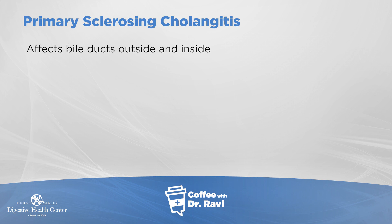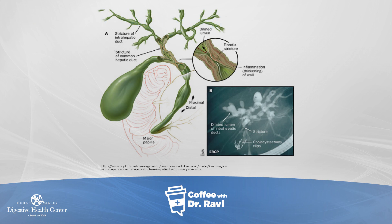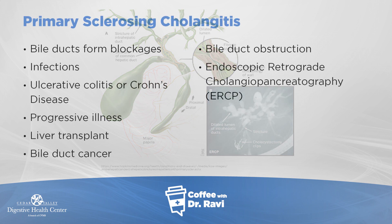The end-stage complications, vitamin deficiencies, and bone problems all need to be kept in mind. On the other hand, in primary sclerosing cholangitis, both the outside and inside bile ducts start getting affected, forming blockages so that bile doesn't drain properly, and people can develop infections. Interestingly, the great majority of people who have PSC also have ulcerative colitis or Crohn's disease. Ulcerative colitis is an immune-driven inflammation of the colon; Crohn's disease can affect the colon or small bowel. PSC is associated with inflammatory bowel disease in about 80 to 90 percent of cases.